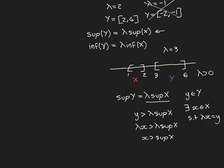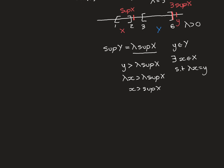But this is a contradiction: the supremum of X is an upper bound for X, so no element inside X can be strictly greater than it. In terms of the picture: if lambda × sup(X) is not an upper bound for Y, there'd be some little y strictly above it; the corresponding little x would then be strictly greater than the supremum of X = 2 — which is impossible. Hence lambda × sup(X) must be an upper bound for Y.